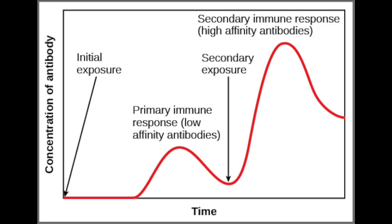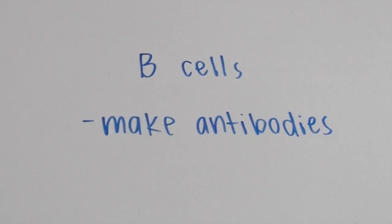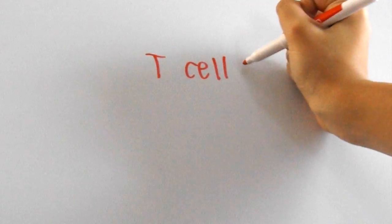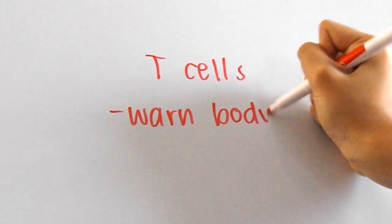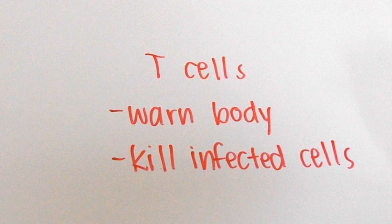If you haven't seen my immune system overview video, B cells are white blood cells that assist the immune system by making antibodies which target pathogens. There are also white blood cells called T cells that can either warn the body that a harmful substance is present or kill infected cells, depending on what type of T cell it is.